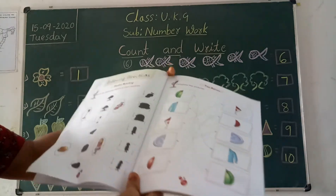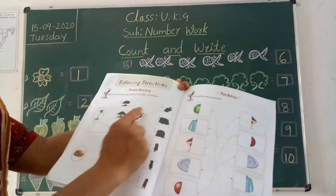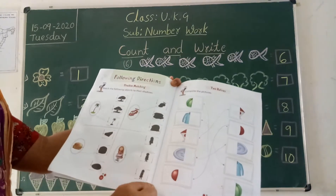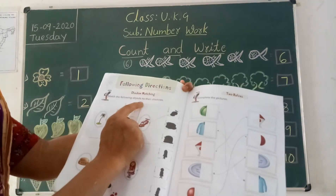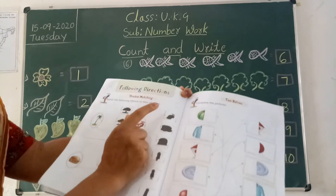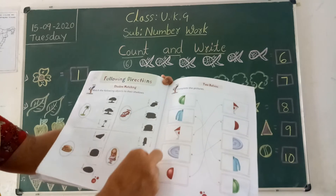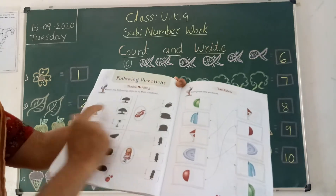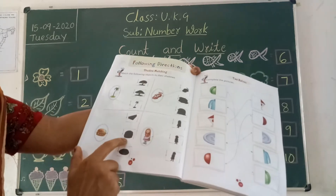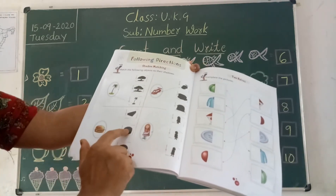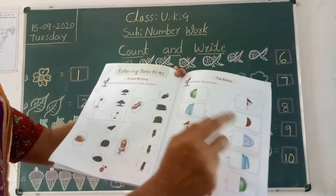Next, page number 18 — following directions. They gave pictures and the same picture as shadow. You have to match it. Match the following objects to their shadows. See here: car, tree, burger, and a girl standing — you have to match each one.